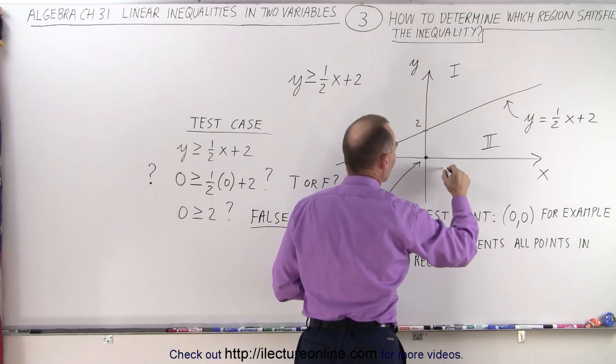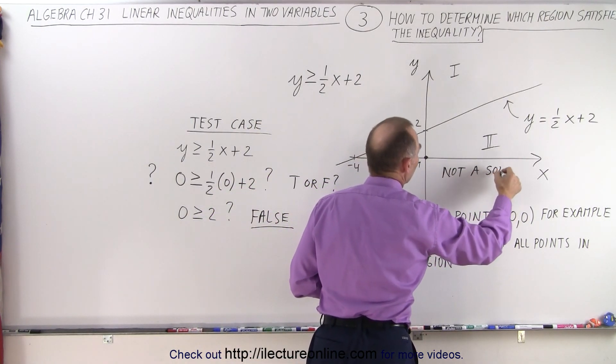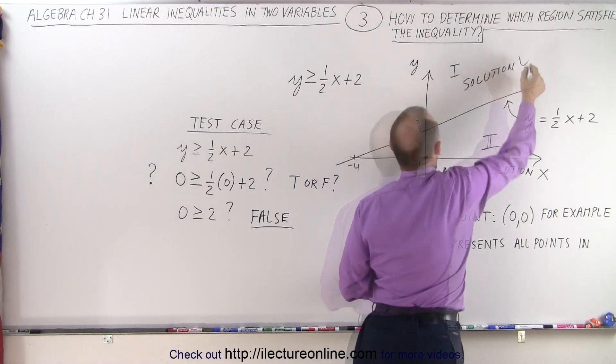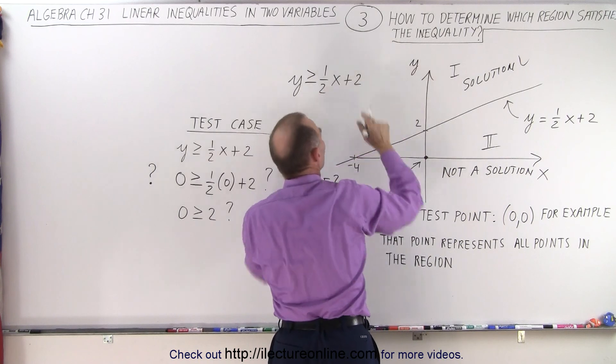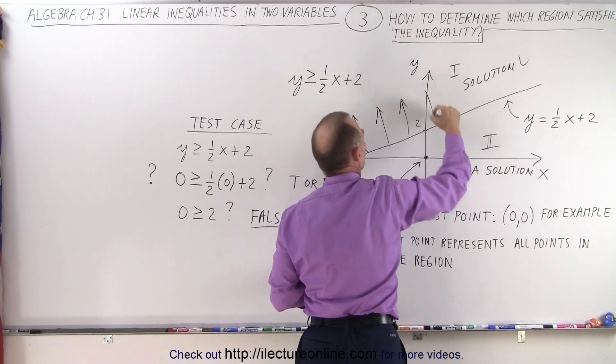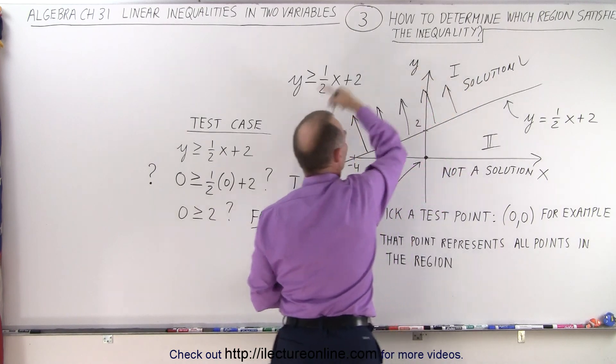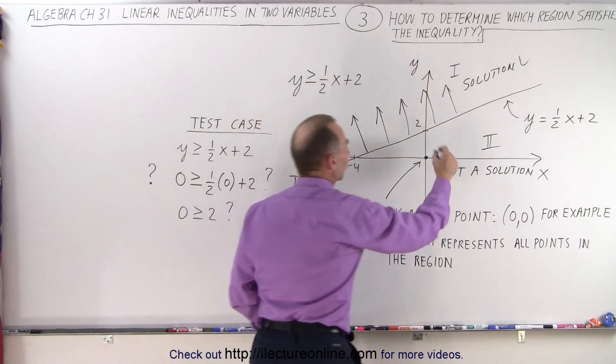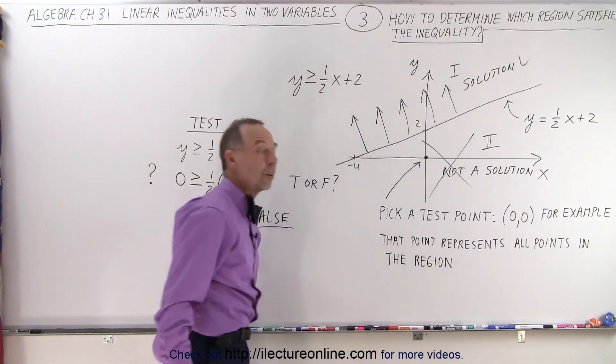This is not a solution. The other side, therefore, is the solution. This region satisfied the inequality, including all the points on the line. And this region does not satisfy the inequality.